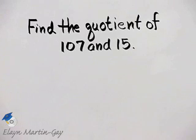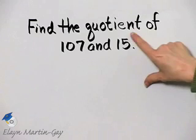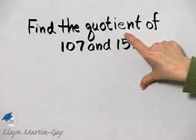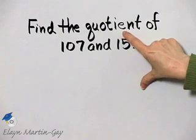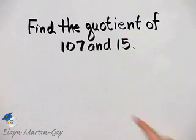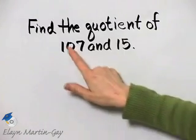Let's find the quotient of 107 and 15. Now remember first what the word quotient means. It means to divide. We must be very careful when dividing and also with subtraction in that order matters.